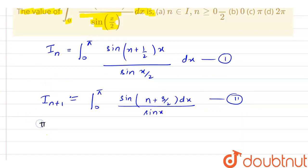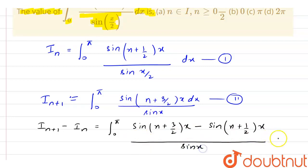If I subtract equation 1 from equation 2, then we have I_{n+1} minus I_n as integration 0 to pi, we have sin n plus 3 by 2 x dx. Let me correct this portion, we have missed the x here. So this is x dx.